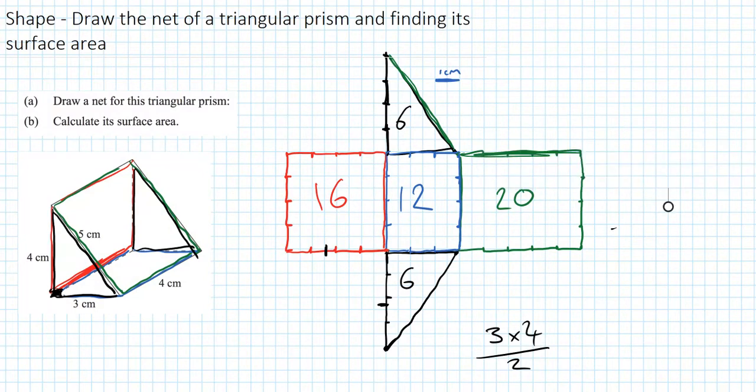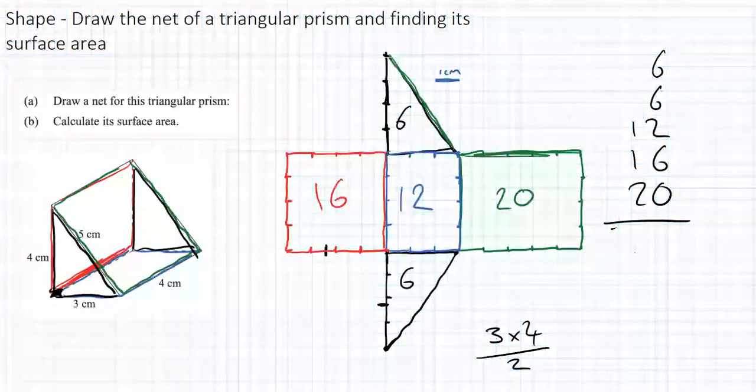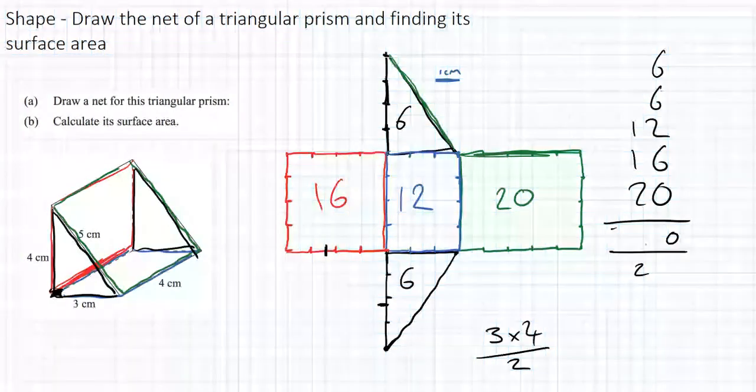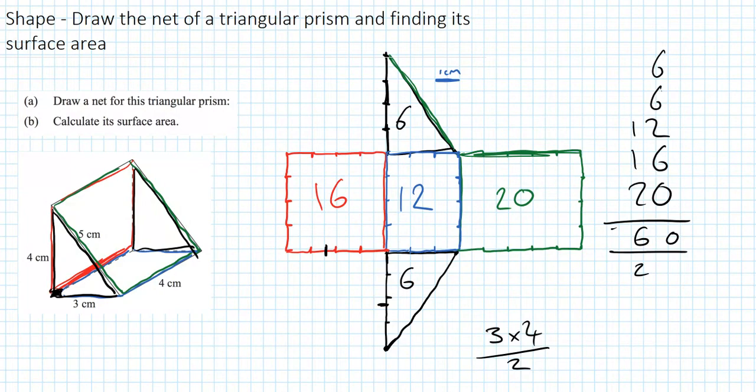So 6 and 6 is 12, plus a 2 is 14, plus a 6 is 20. And then a 1 and 1, a 2 and a 2 is going to make a 6. So in total here, we're going to have 60 centimeters squared.